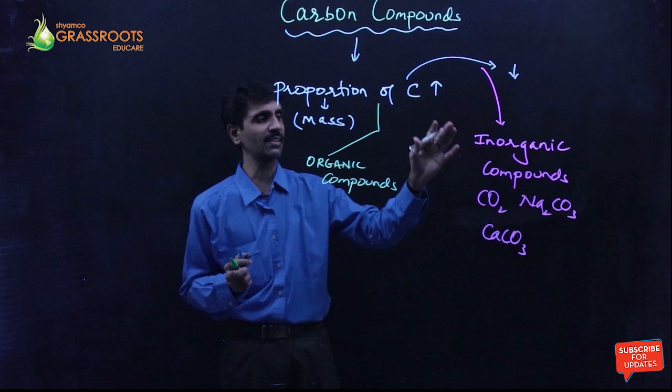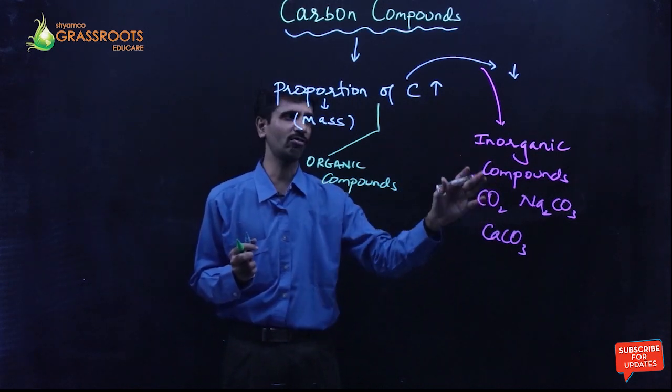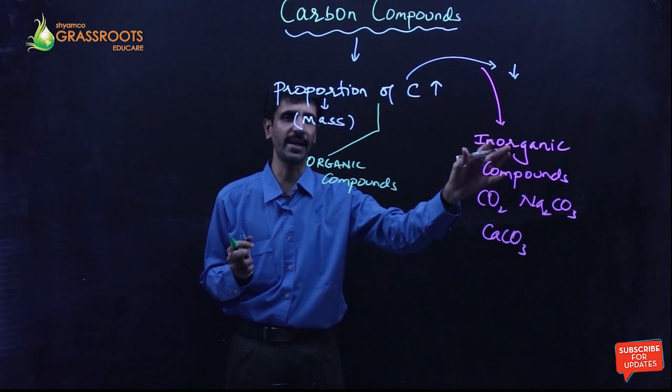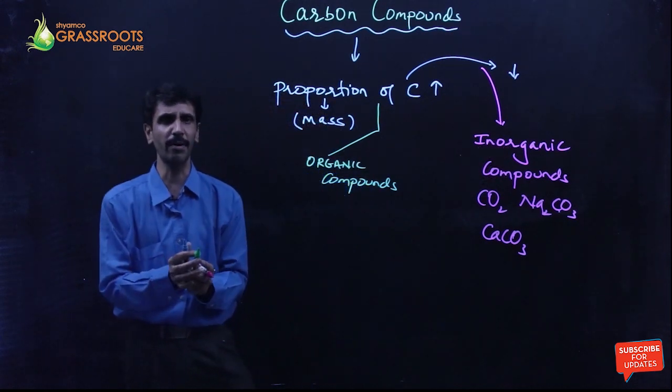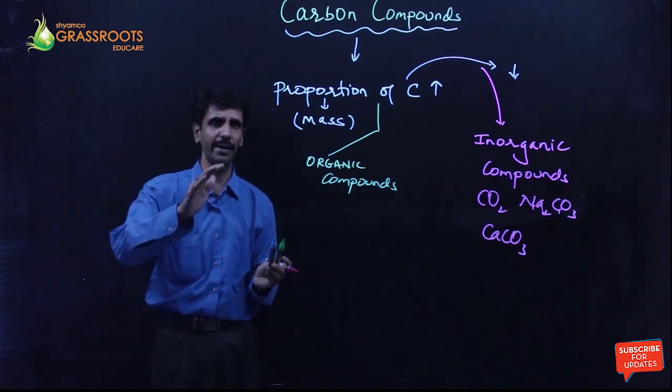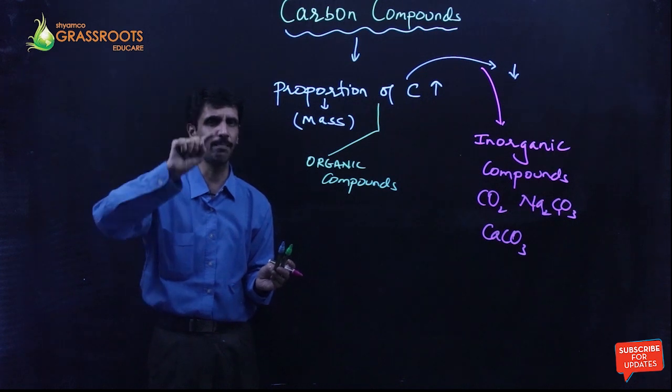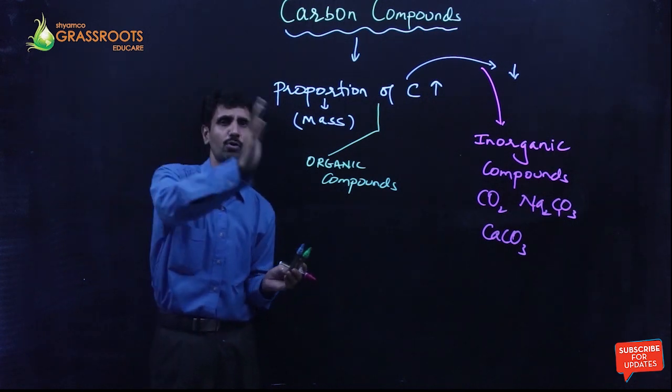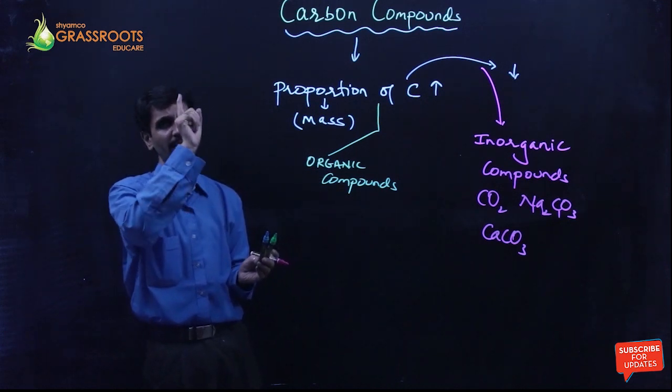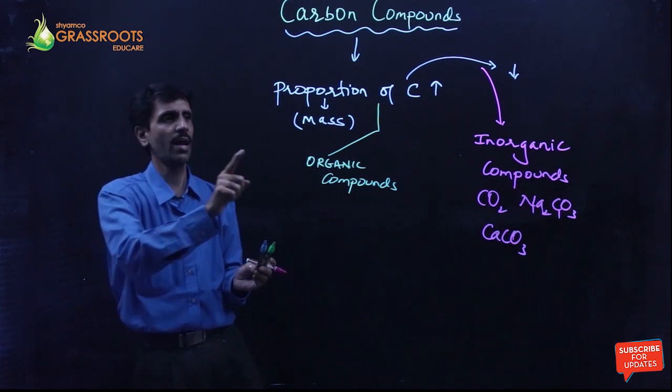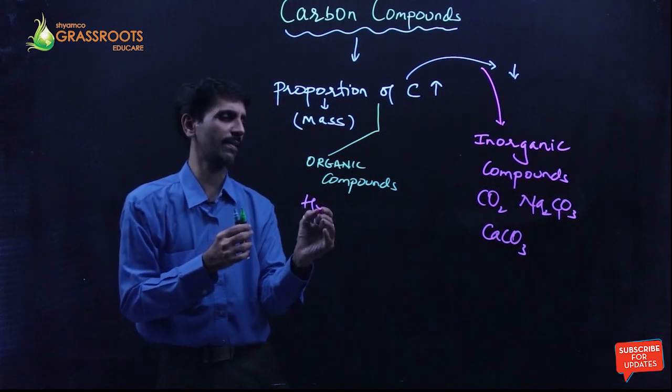So in spite of the fact that these compounds contain carbon, but because their mass is less, it comes under which category? Inorganic compounds. So I guess the concept is clear. So whenever we talk about carbon compounds, generally depending upon the proportion of carbon, these carbon compounds are bifurcated into two parts, organic and inorganic. If the proportion of carbon is high in terms of mass, I call it as organic compounds.